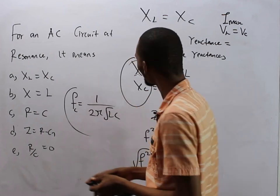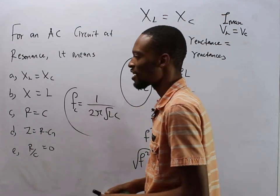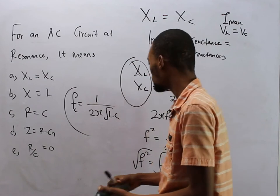So that explains an AC circuit at resonance, and when you are given questions to solve, what you simply need to do is substitute.